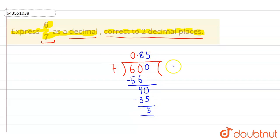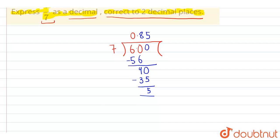From here as we can see our quotient is 0.85. So 6 upon 7 is basically written in 0.85 form.